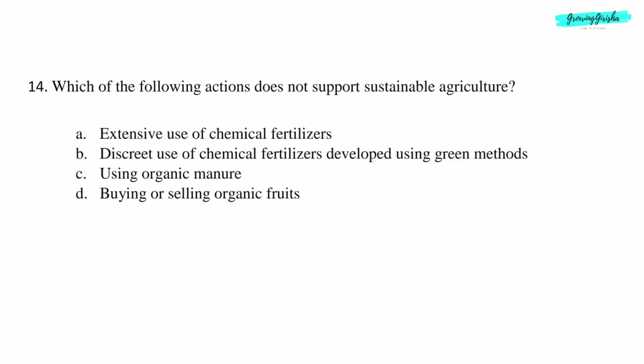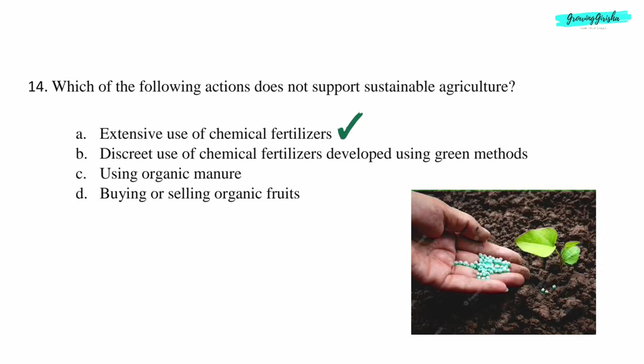Question 14: Which of the following actions does not support sustainable agriculture? Option A: Extensive use of chemical fertilizers.